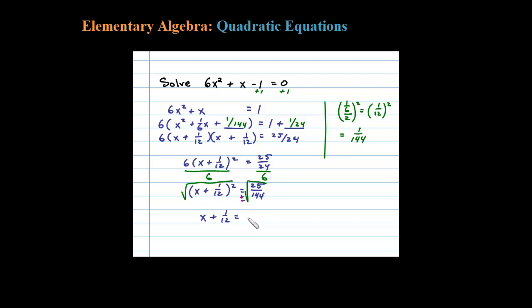Now subtracting 1/12 on both sides will have x equals negative 1/12 plus or minus 5/12. So x equals negative 1/12 minus 5/12